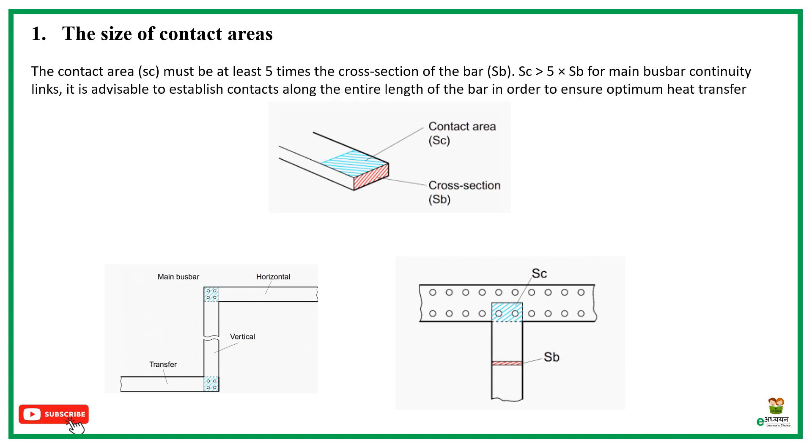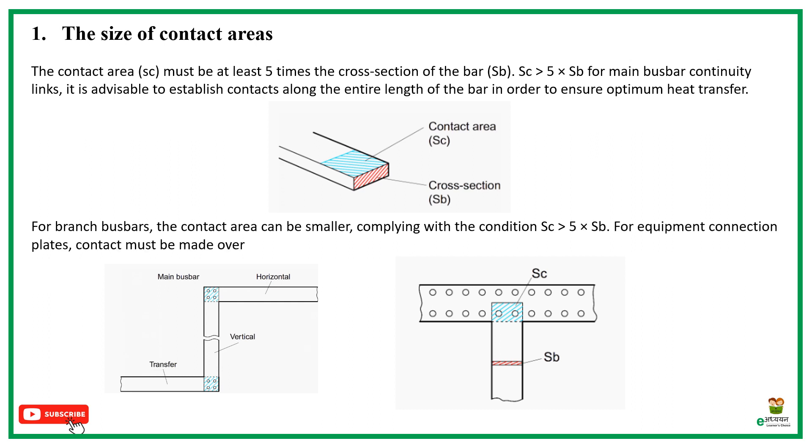It is advisable to establish contacts along the entire length of the bar in order to ensure optimum heat transfer. For branch buzzbars, the contact area can be smaller, complying with the condition SC equals 5 times SB. For equipment connection plates, contact must be made over the whole surface of the plate for use at nominal current.